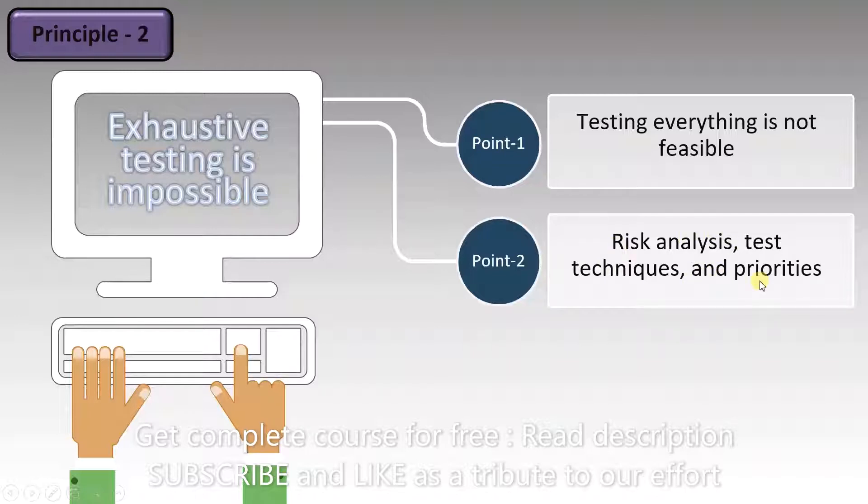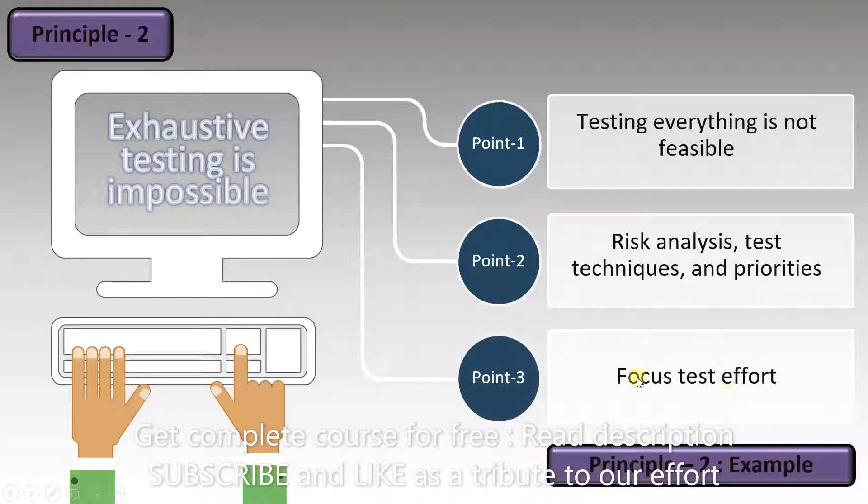The final point is to focus test effort. When we are testing a feature, we need to know how much effort it requires. This is why exhaustive testing is impossible. Testing requires a certain amount of effort, and that is why testing everything is not feasible.